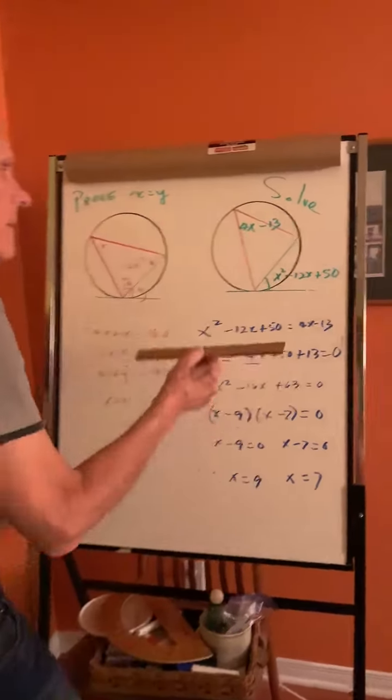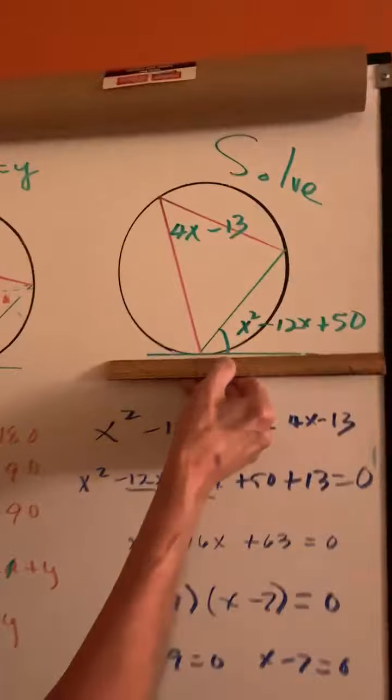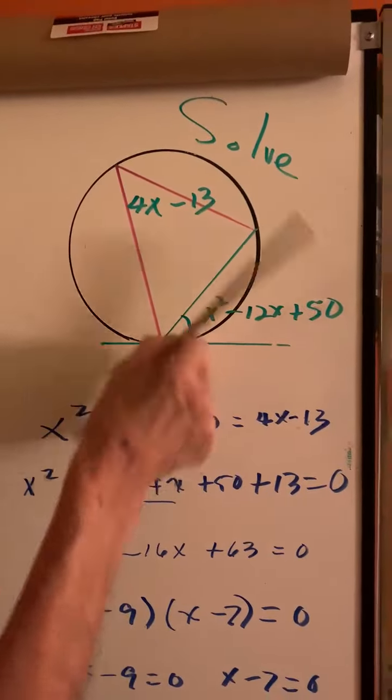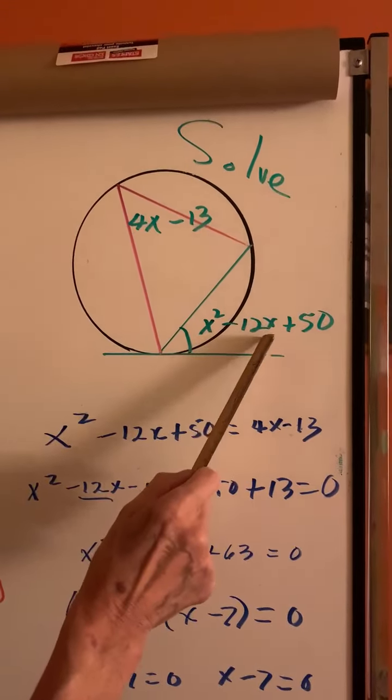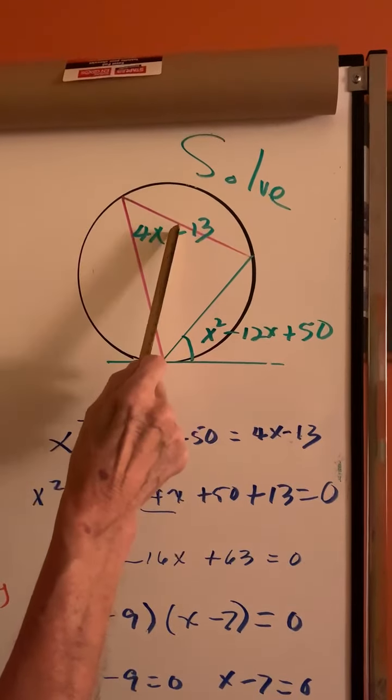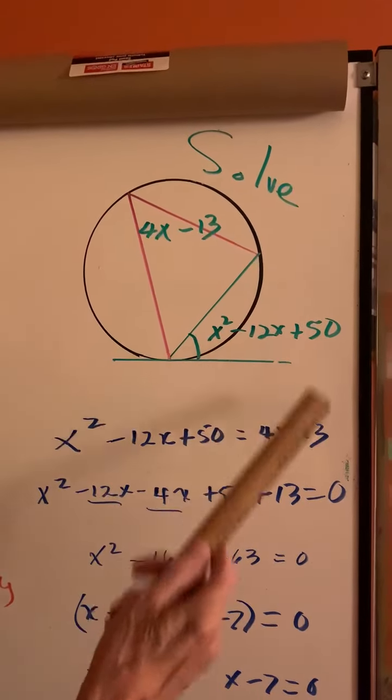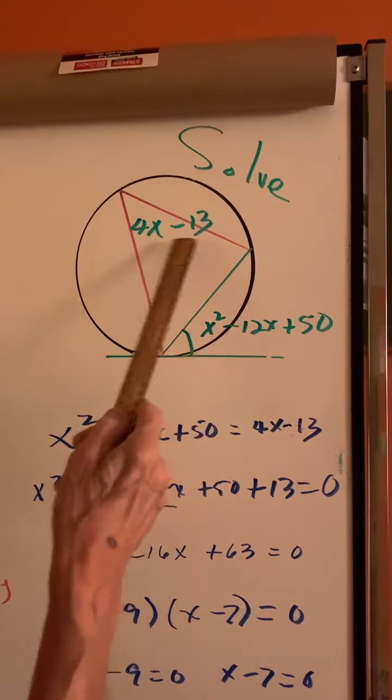Solving equation. The angle between the tangent and the chord is equal to the inscribed angle on the other side of the chord. We're going to solve that equation. But why is that true?